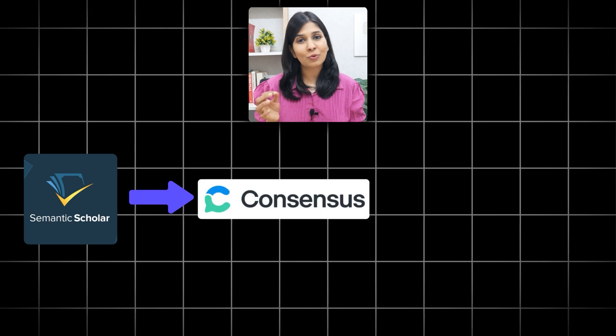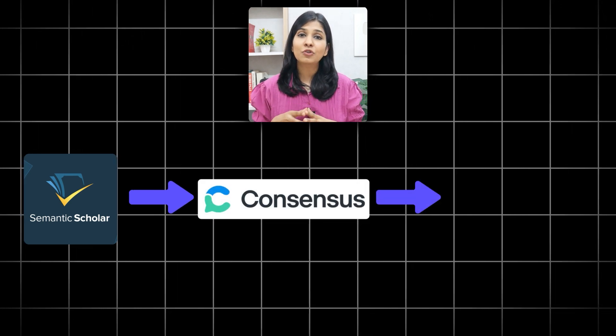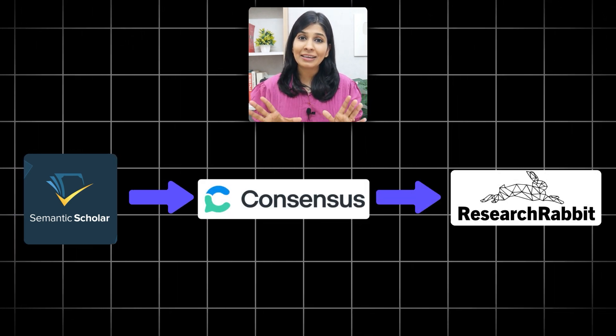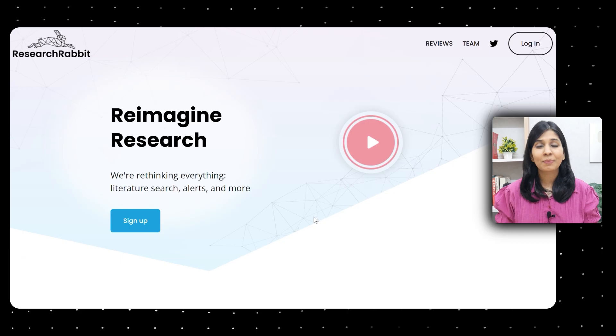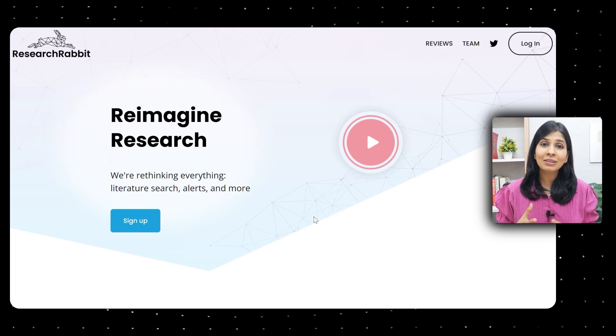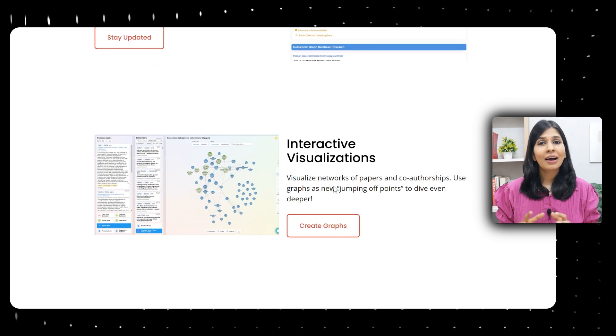The third tool on my list is Research Rabbit. After you've gathered your papers from Semantic Scholar and gained clarity on your topic through Consensus, you want to make sure your literature review is in-depth and you don't miss any important studies. For this, I would highly recommend Research Rabbit.